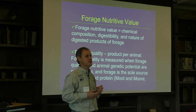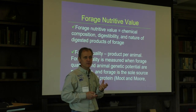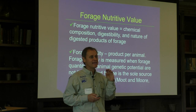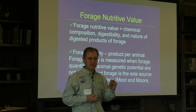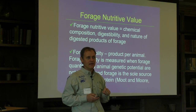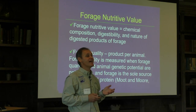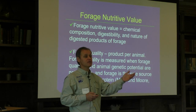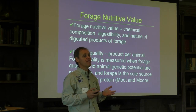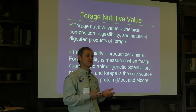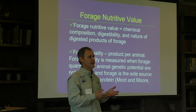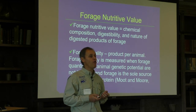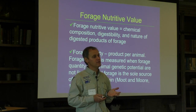Nutritive value is something you measure — when you send a sample to the lab, they report back with a concentration of a product such as protein, NDF, ADF, or digestibility. That is nutritive value. Quality, on the other hand, is an animal product. It's a combination of nutritive value with the amount the animal ate, translated into animal product — milk production, meat, wool, or whatever you are targeting.